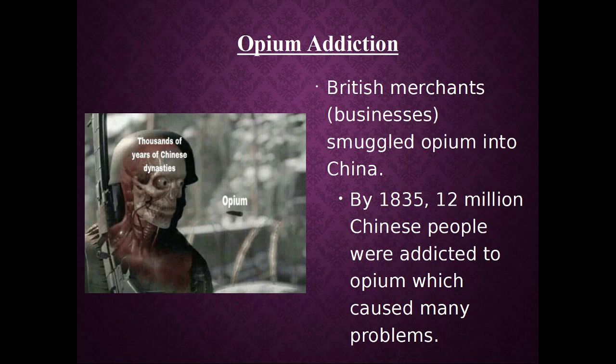So the British merchants essentially became drug dealers. They smuggled opium into China. And by the time we get to 1835, there were approximately 12 million Chinese people that were addicted to opium. This causes huge problems for obvious reasons. Number one, you have a drug addiction going on in your country. But number two, opium — if you don't know what it does — have you ever heard of opiates, or painkillers called opiates?